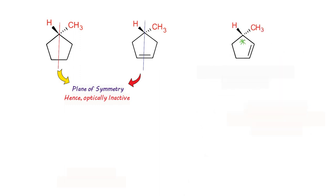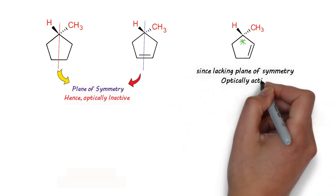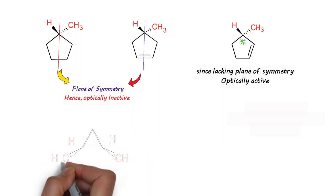In the next case there is a chiral center because one side of the ring's electron density is different from the other side — on one side there are only single bonds, and on the other side there is one double bond, making the two electron densities different. Hence there is a chiral center, and because of the lack of a plane of symmetry, it is optically active.